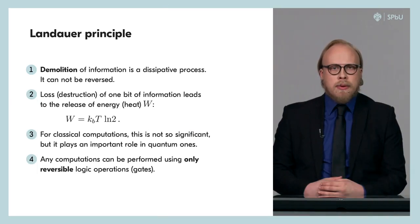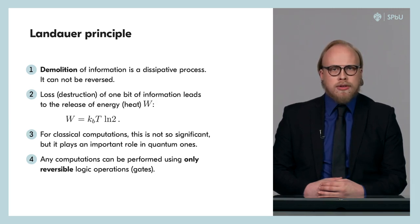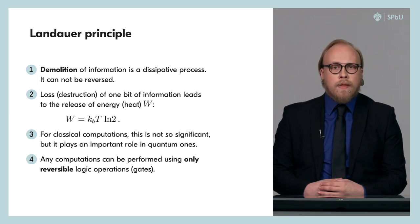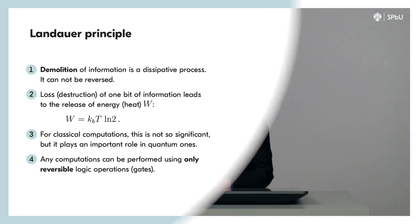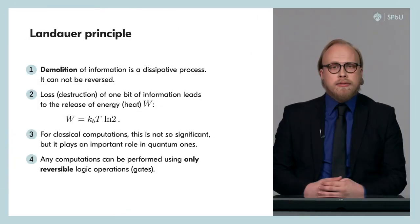At first glance, this remark seems insignificant, since in classical computation using the AND element, we can always create copies of bits A and B before calculating. However, in practice, there is one important physical process associated with it that deserves our close attention. When performing logical operations using XOR, AND, OR, and other irreversible logical elements, we irrevocably lose some information about the state of bits A and B, and that is why we cannot reverse the action of these logical elements. In physics, the destruction of information is a dissipative process — some of the energy is converted into heat, that is, into thermal energy, or the energy of uncontrolled movement of atoms and molecules that make up the physical system, and this process is irreversible.